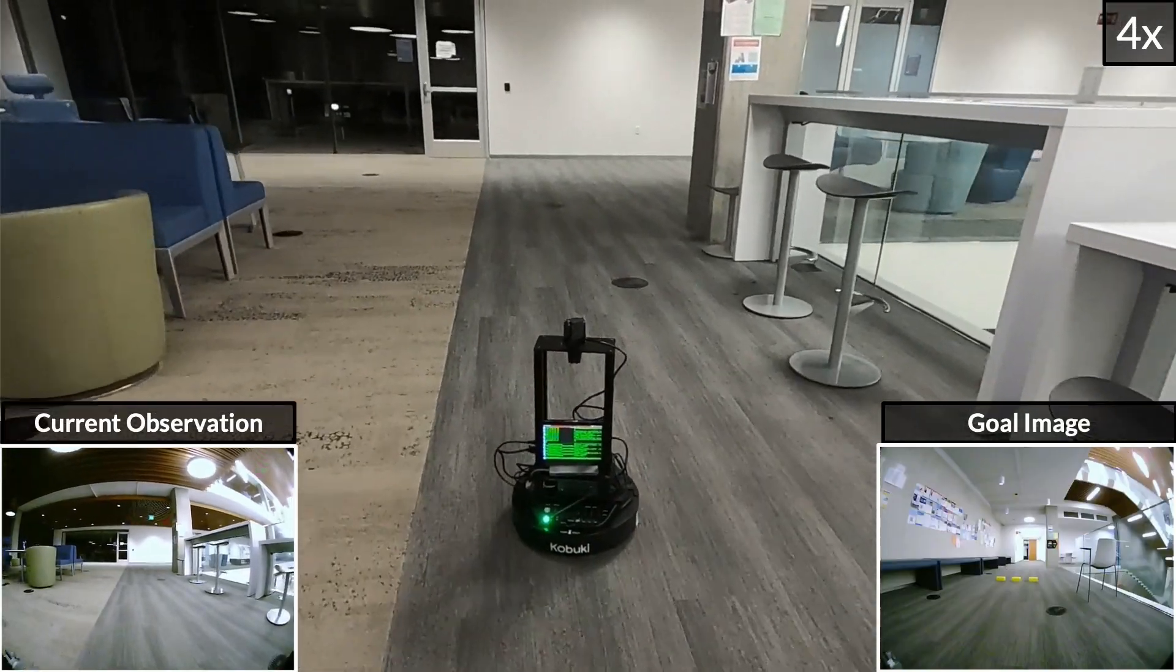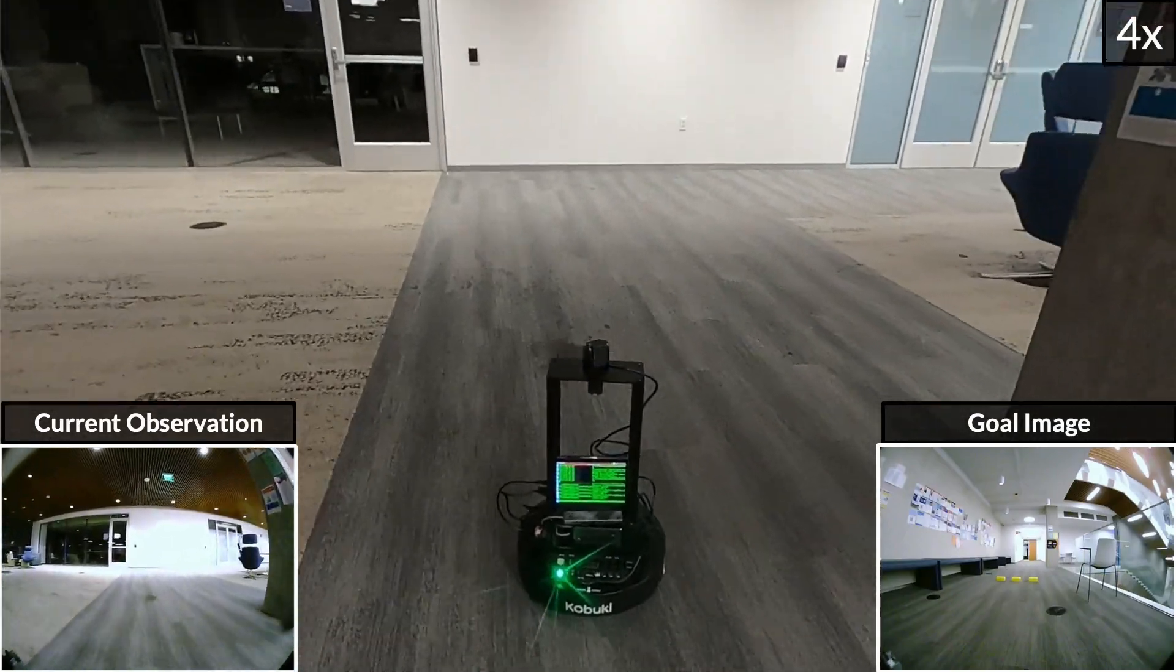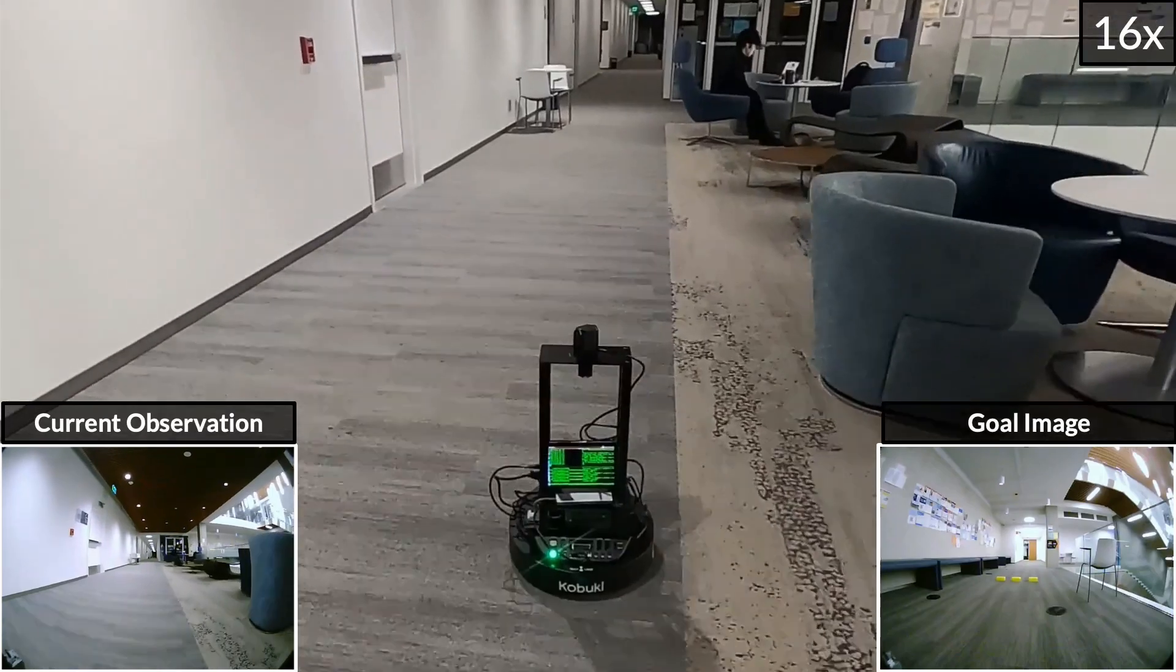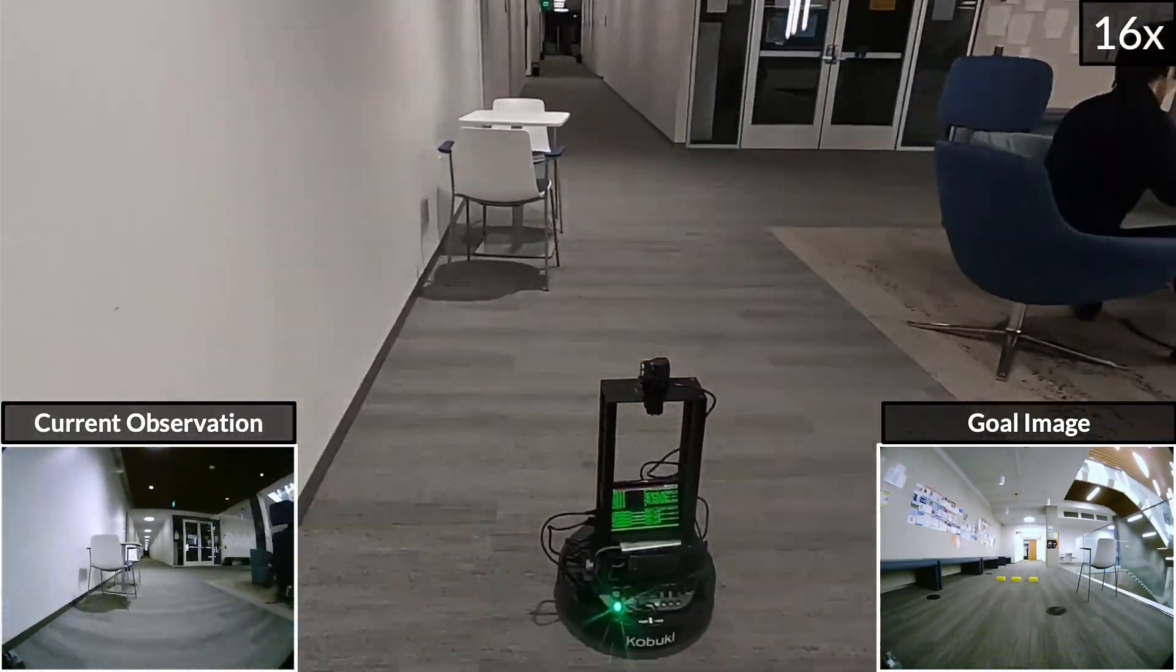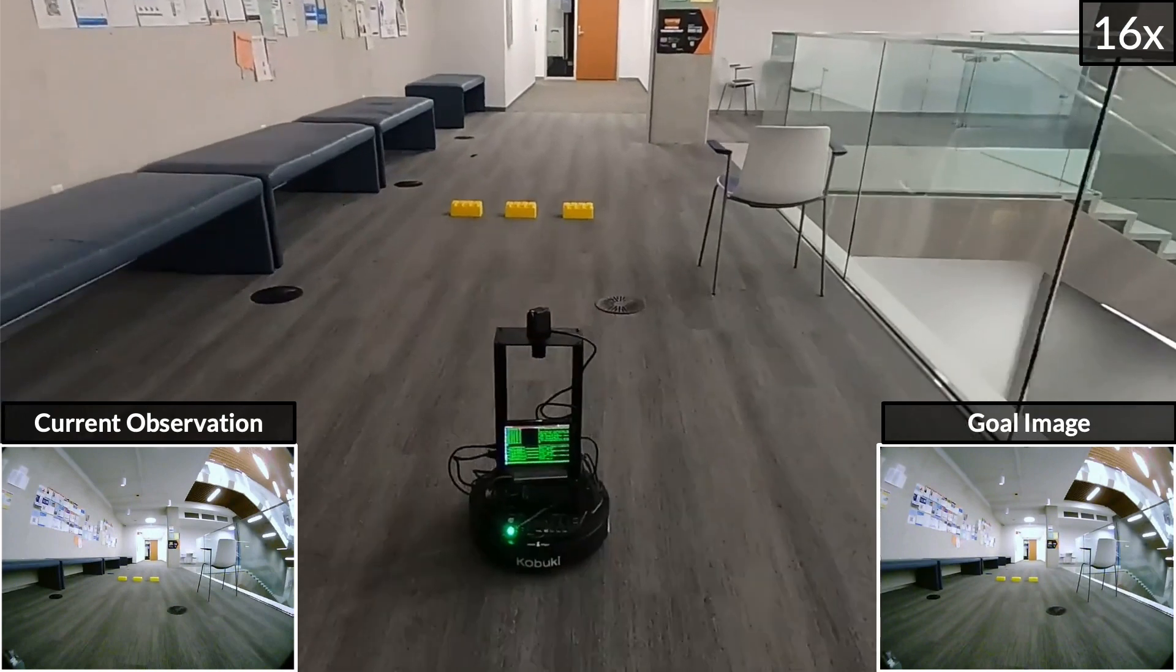We also deploy the omnipolicy on a LoCoBot, another new robot with no corresponding training data. While the new robots have distinct camera hardware, dynamics, and viewpoints, the shared action space and embodiment context allow the omnipolicy to generalize to these new parameters.